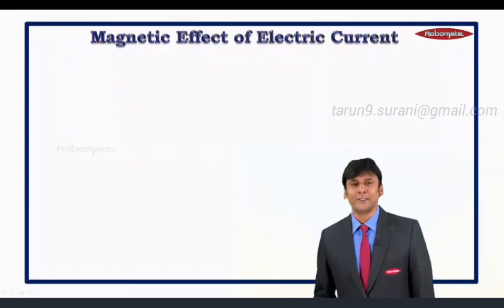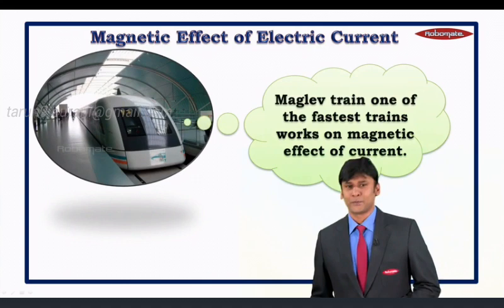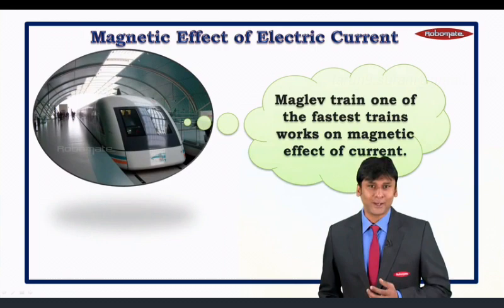This chapter is on the magnetic effect of electric current, which plays a very important role in our day-to-day lives. Let us see a few examples: the maglev train, one of the fastest trains, works on the magnetic effect of electric current.